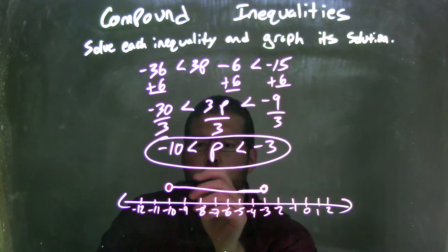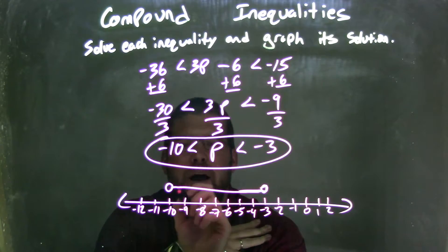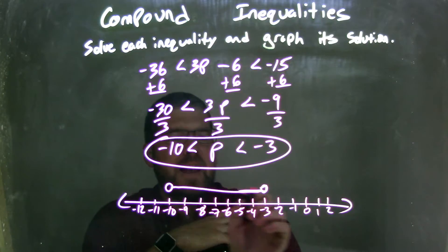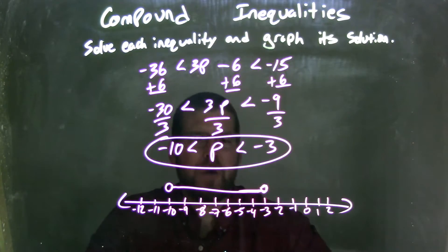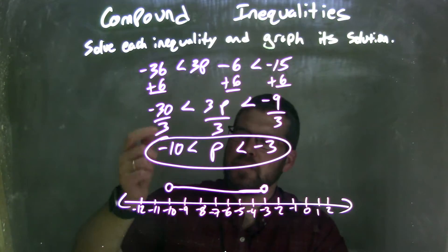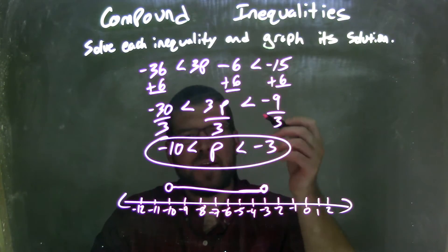To graph that, I have an open circle at negative 10 and negative 3 because p does not equal them, it's just in between. And so I have my line that connects them to show that this is where p can exist, and so now my graph represents and matches my final answer, which is negative 10 is less than p, which is less than negative 3.